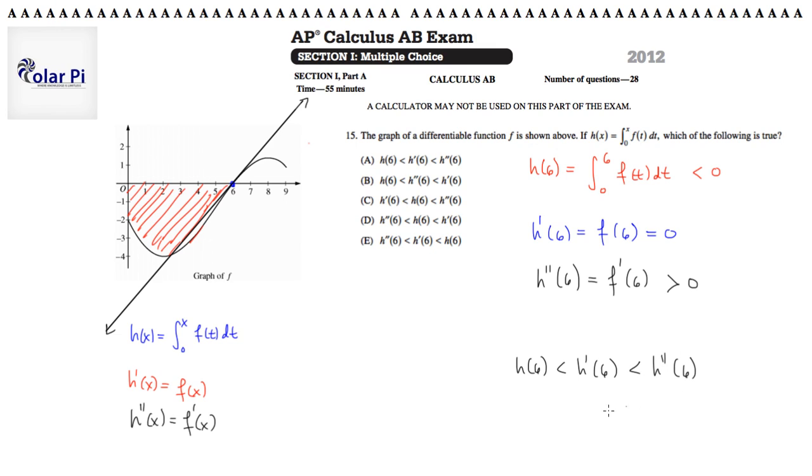So whichever one says this is the correct answer, h(6) is less than h'(6) is less than h double prime. Boy, a lot of a's here. So a, got it. Take care.